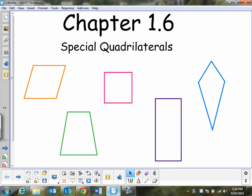This is chapter 1.6, special quadrilaterals. We're on the topic of polygons. These are some special types of quadrilaterals.